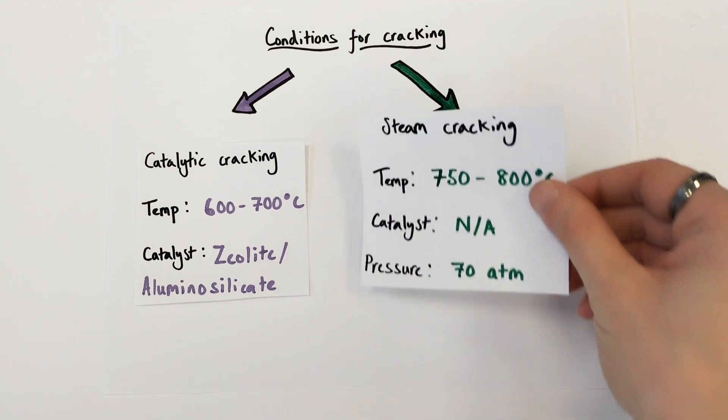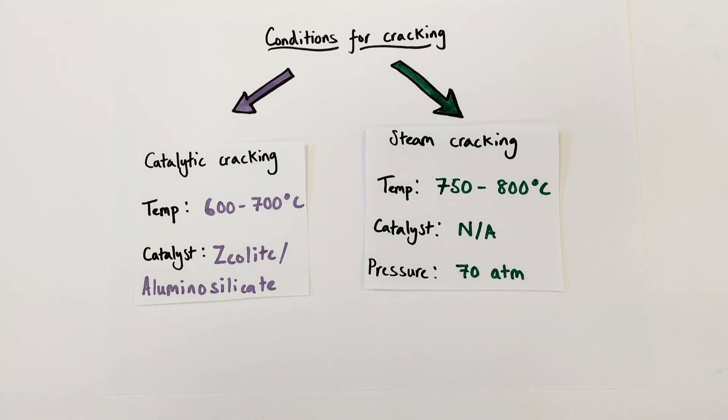The other method is known as steam cracking. Now because there's no catalyst required it does require high temperatures of between 750 to 800 degrees centigrade and a higher pressure of 70 atmospheres. So slightly more vigorous reaction conditions for that method.